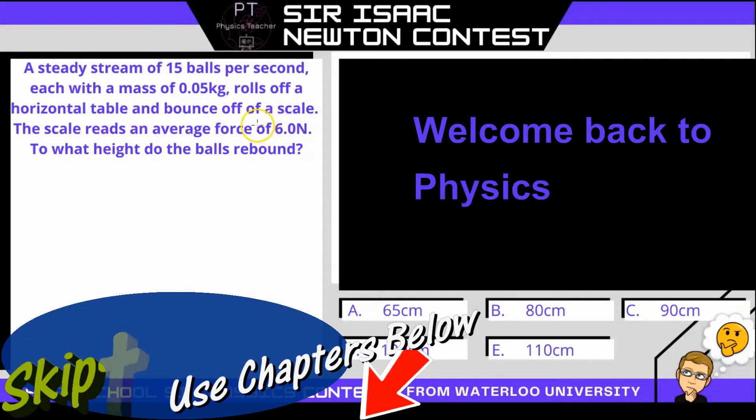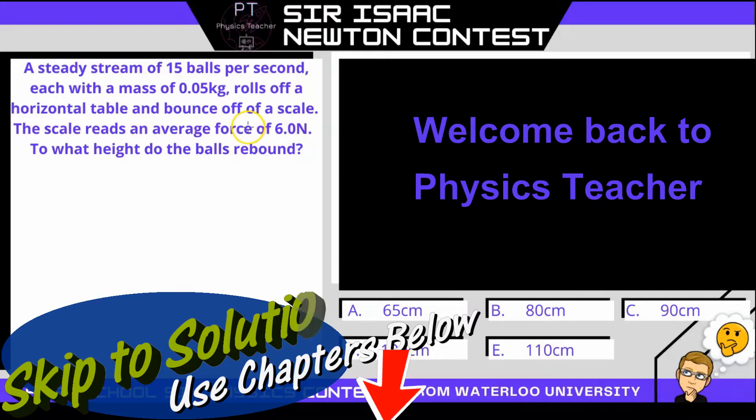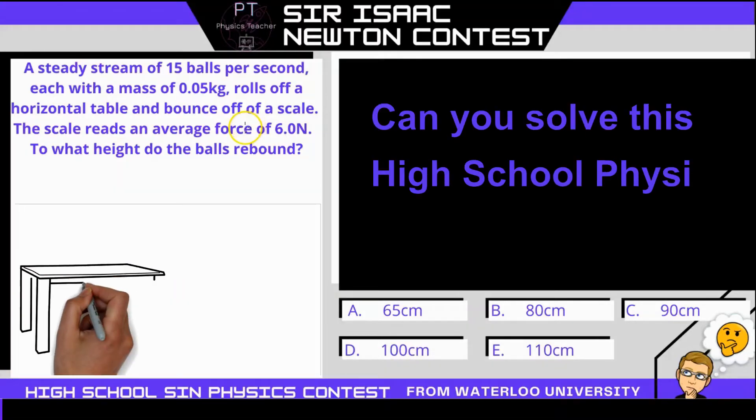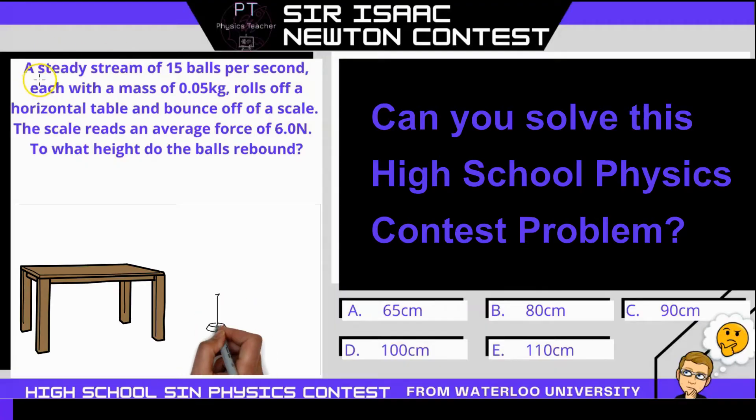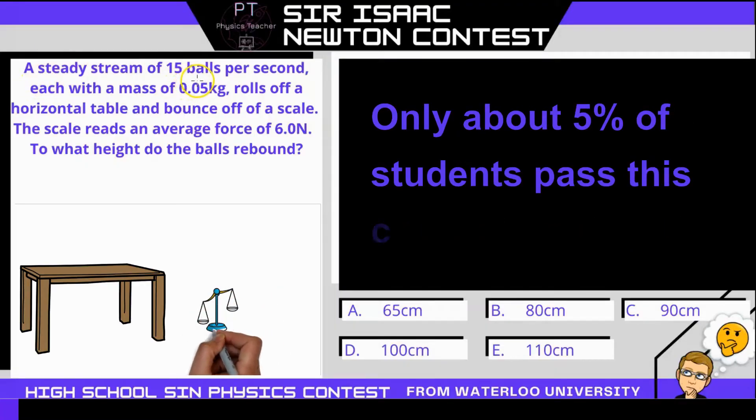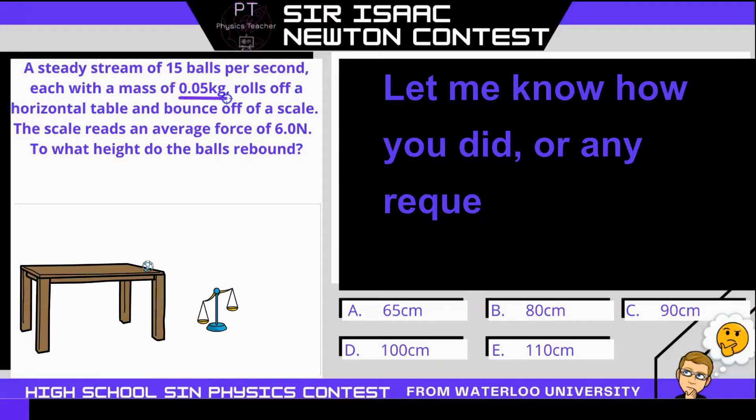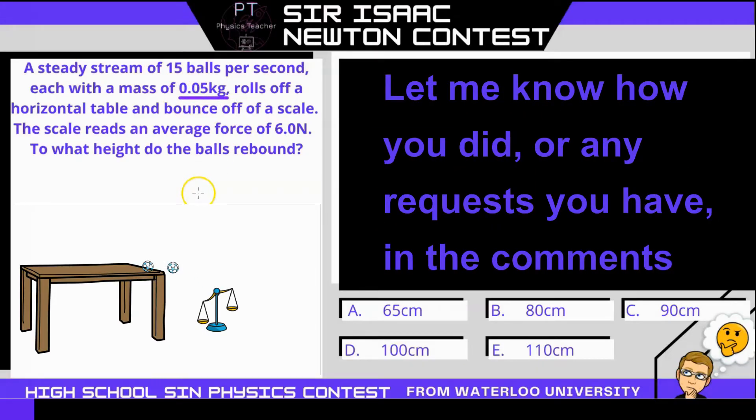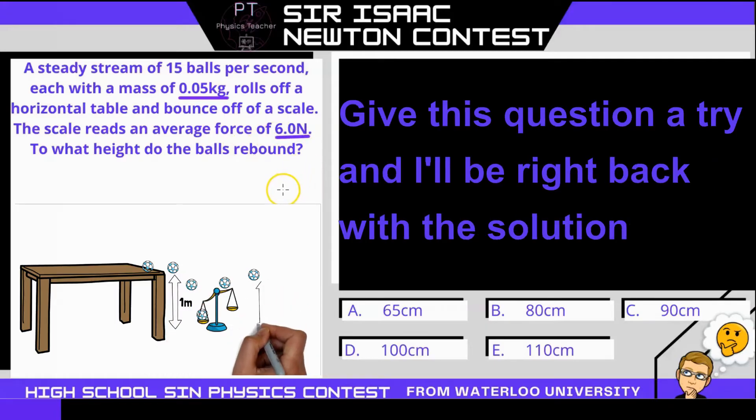Hi, welcome to Physics Teacher, the channel that prepares you for the Waterloo math and science contest. This is a grade 12 physics Sir Isaac Newton contest question. In it we have a steady stream of 15 balls per second, each having a mass of 0.05 kilograms, rolls off a horizontal table and bounces off of a scale. The scale reads an average force of 6 newtons. To what height do the balls rebound? Give it a try, and I'll be right back with the solution.